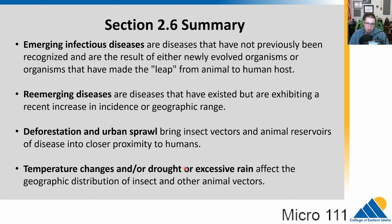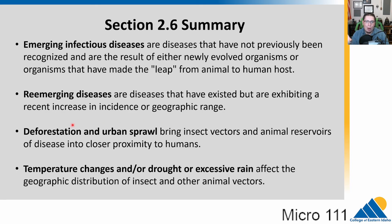Temperature change, drought, or excessive rain — particularly flooding — can lead to emerging diseases, as the fecal-oral route contaminates water supplies. Deforestation and urban sprawl are complex topics, but think about how humans moving into new areas potentially increases the risk of disease. That's it for chapter two — we have one more chapter in this unit: chapter three.